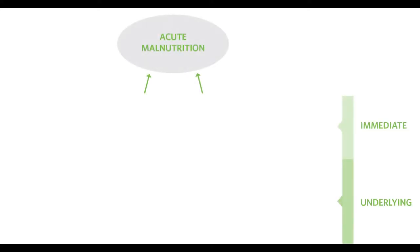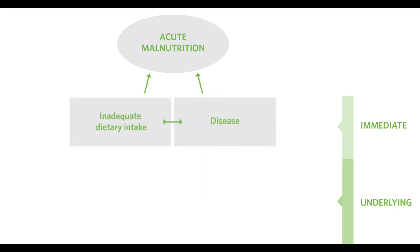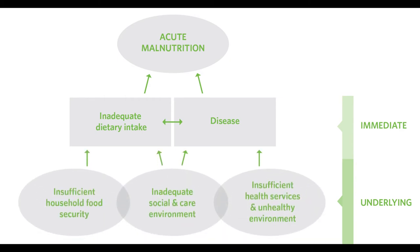There is wide agreement about the immediate and underlying causes of malnutrition that directly affect children and operate within households and communities. The immediate causes relate to inadequate dietary intake and disease, while the underlying causes relate to insufficient household food security, an inadequate social and care environment, and insufficient health services and an unhealthy environment.